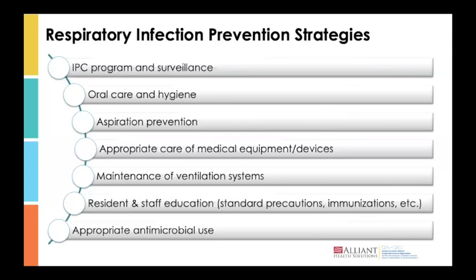Appropriate care of medical equipment and devices applies to ventilated residents and those with tracheostomies — elevate the head of the bed, ensure peptic ulcer prophylaxis and DVT prophylaxis, and provide daily oral care. Maintenance of ventilation systems means having a process to work with your facility engineers to ensure airflow and filters are properly maintained and changed per recommendations to ensure adequate airflow and less environmental contamination. Continue to update staff on education and ensure antimicrobials are prescribed appropriately.